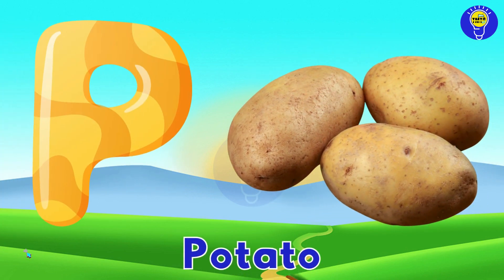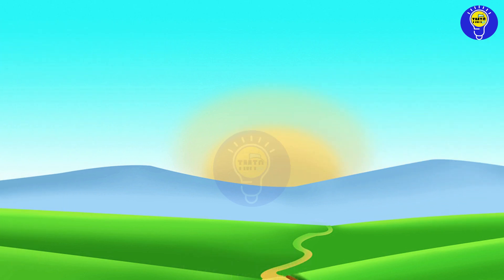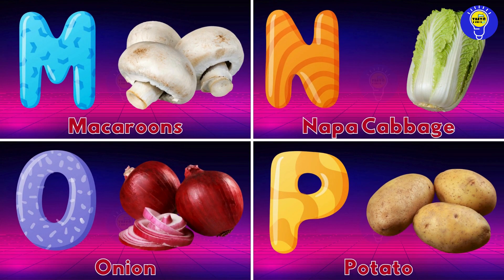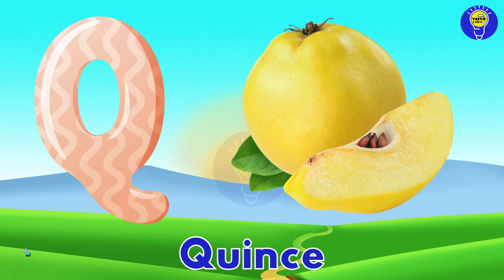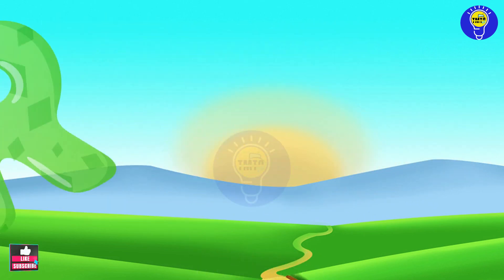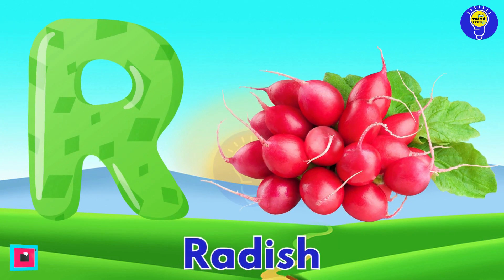P is for potato, potato. Q is for quince, quince. R is for radish, radish.